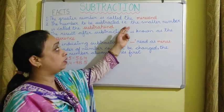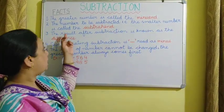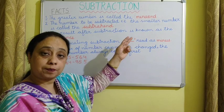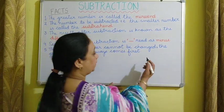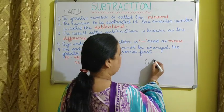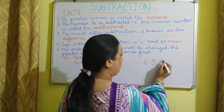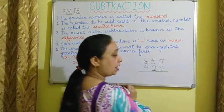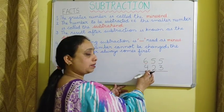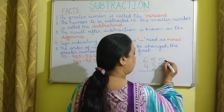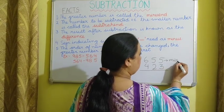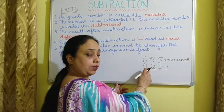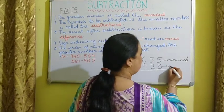The greater number is called the minuend. The number to be subtracted — that is the smaller number — is the subtrahend. Suppose we have the numbers 655 and 423. This is the greater number and this is the smaller number. So the greater number is the minuend. The smaller number, written below and to be subtracted, is the subtrahend.